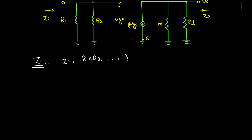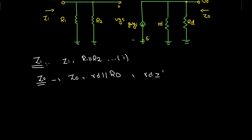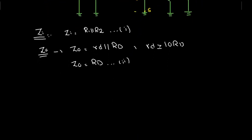Now to find Z0, we need to make VI equal to zero. When VI equals zero, VGS is going to be equal to zero, so the dependent current source will be an open circuit. Therefore Z0 will be equal to the parallel combination of rd and capital RD. And if RD is greater than or equal to ten times rd, we get Z0 equal to Rd. This is the same equation derived for the output impedance of the fixed bias configuration as well as the self-bias configuration.